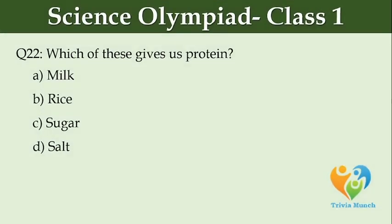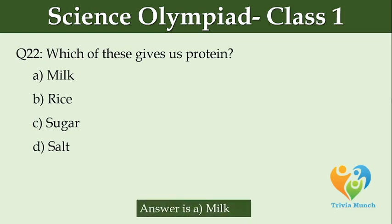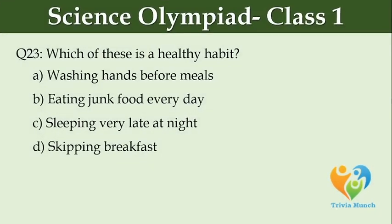Which of these gives us protein? Option A: Milk. Option B: Rice. Option C: Sugar. Option D: Salt. Which of these is a healthy habit? Option A: Washing hands before meals. Option B: Eating junk food every day. Option C: Sleeping very late at night. Option D: Skipping breakfast.